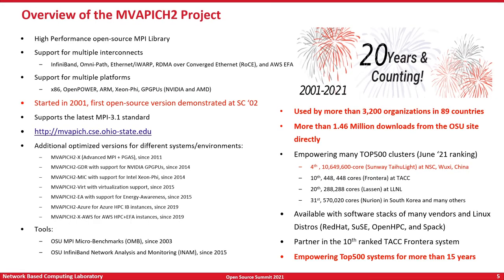In this context, we started this project. We have been working on it for many years, almost from day one of InfiniBand. When InfiniBand was introduced in 2000, we were ready to start working on high-performance API design on top of InfiniBand. Prior to that, we worked on commodity interconnects like Myrinet and Quadrics. We started in 2000, and in 2001 we had our first open source version demonstrated at Supercomputing 2002 — almost 19 years back now.